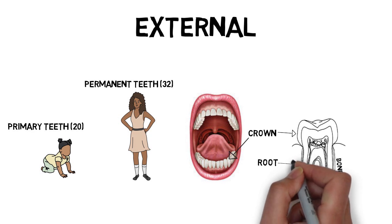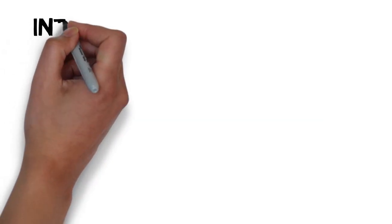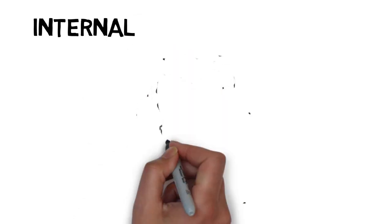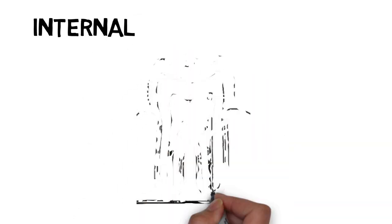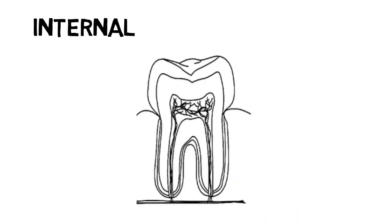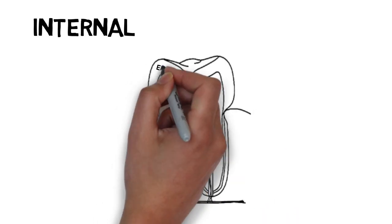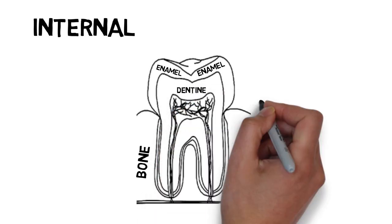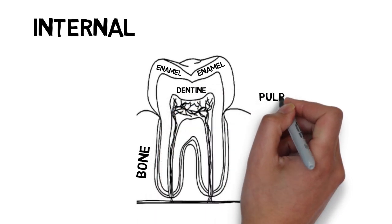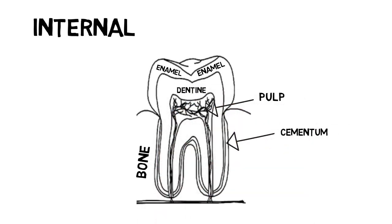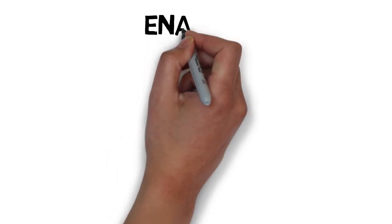When we look at the internal structure of our teeth, there are four major components to remember. First is the enamel, the outermost layer. Second is the dentine, the layer beneath the enamel. Third is the pulp, the innermost layer. And the final component is the cementum, which covers the root.